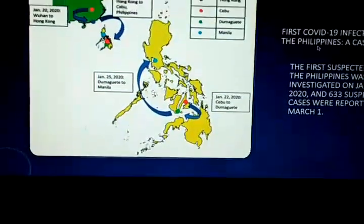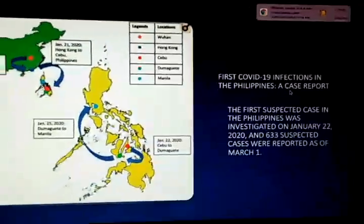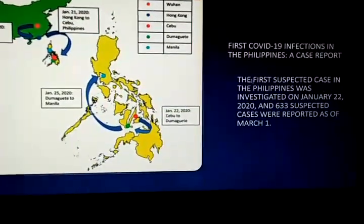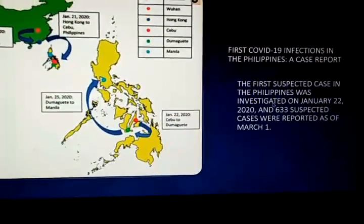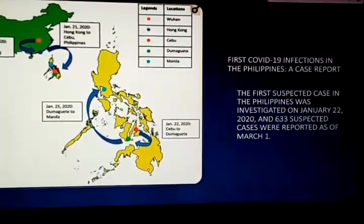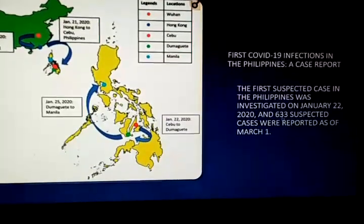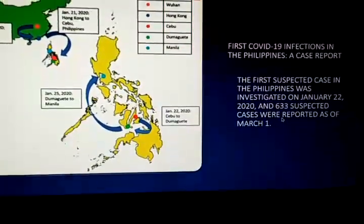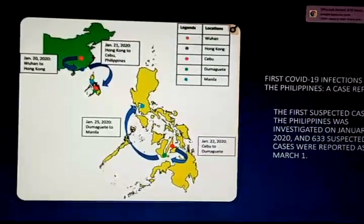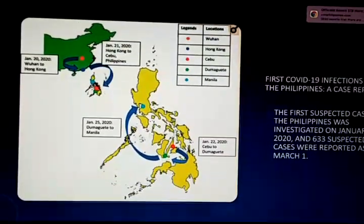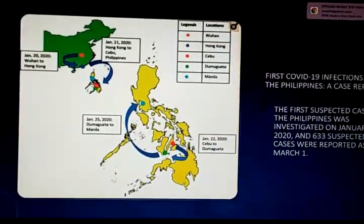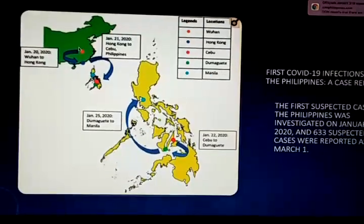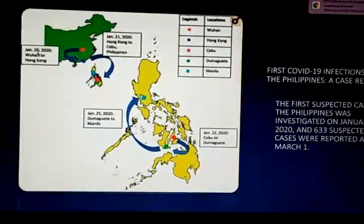The first COVID-19 infection in the Philippines was traced and estimated on January 22, 2020, with 633 suspected cases reported as of March 1. As you can see here, this is a map of the transfer of the pandemic, starting with the history in Wuhan, China, showing how the virus spread from there.